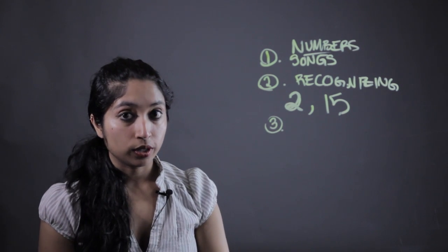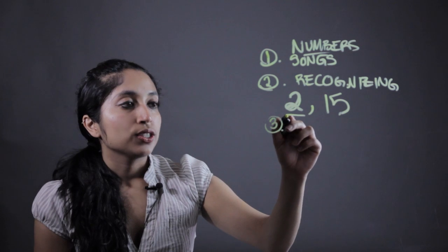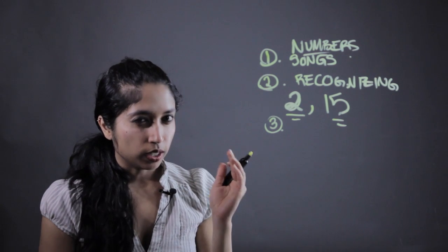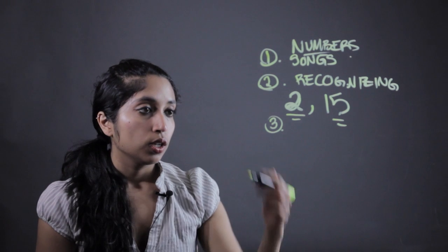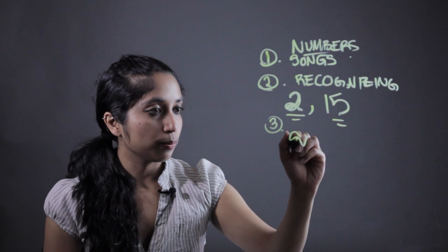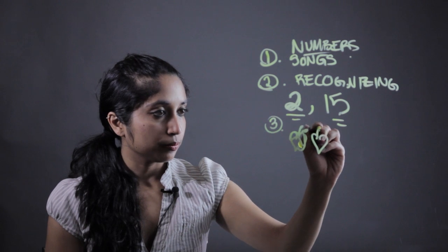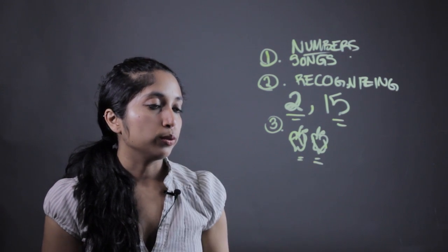Third thing you're going to want to work on is 1 to 1 correspondence. That means actually understanding what these things we learned, what they sounded like and what they look like, what they mean in the real world. So like 2 apples. That's a bad apple. There we go.